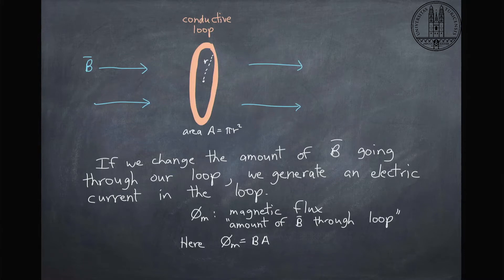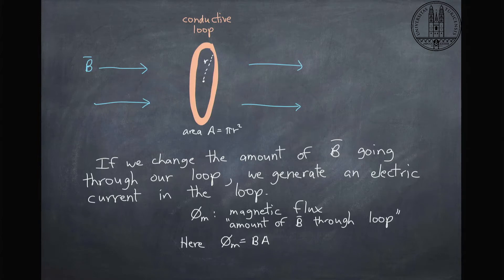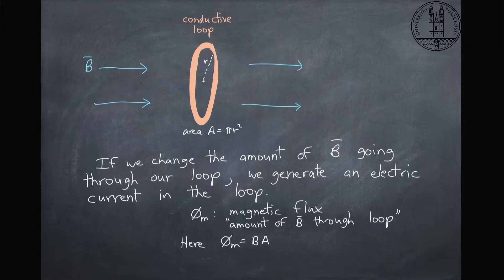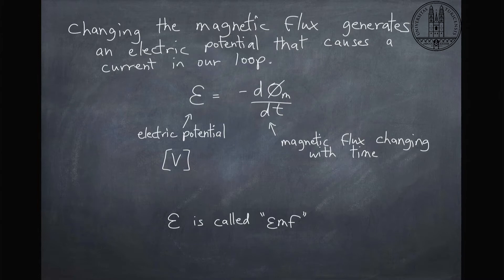When you put a magnetic field through a conducting loop — like a circle with an area of pi r squared — if we change the amount of magnetic field going through this loop, we can generate an electric current running around it. The way we quantify this is with something called magnetic flux, which is just the magnetic field times the area. If we change this magnetic flux, we can generate electricity. We write this in a formula: we can generate an electric potential based on a magnetic flux that's changing with time. This electric potential is called EMF.